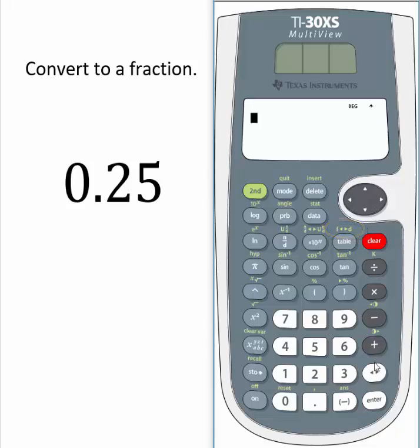So let's enter 25 hundredths, so 0.25. Now let's select the second button to tell the calculator that you want to use the secondary function above the table button. Now select the table button.